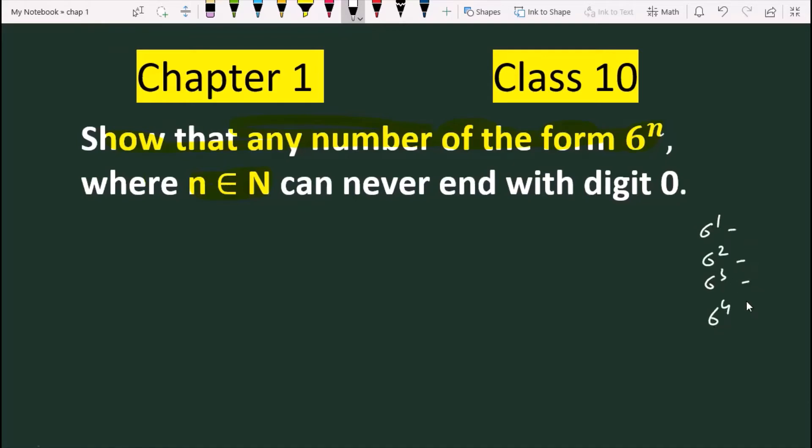You have to show that there is no such value that the answer will end from 0. Like 6 cubed is 216, so it is not 0 at the end. This is our question. You have to understand that if any number at the end has 0, then it means that 10 should be a factor.